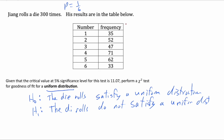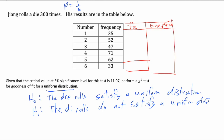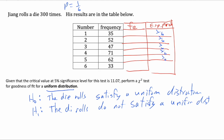Then we need the expected frequencies — or the expected probabilities. Your probabilities do need to add up to 1, so no rounded probabilities here. The probabilities are going to be 1/6 each. And the expected values: 300 times 1/6 is 50, so you can put in 50 for your test.